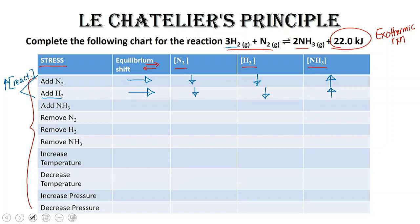Adding ammonia means increasing the concentration of our product. If I add ammonia to the system, there is no need to make more product, so the reaction shifts to the left to relieve that stress. As a result, we form more reactant, and the concentrations of nitrogen and hydrogen increase. Since we used up the ammonia that was added to relieve the stress, the concentration of ammonia goes down.